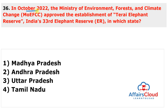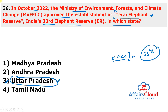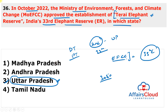Next question: the Ministry of Environment, Forest and Climate Change approved the establishment of the Terai Elephant Reserve. This will be the 33rd elephant reserve of India and is situated in which state? The answer is Uttar Pradesh. The ministry approved the 33rd elephant reserve of India, named the Terai Elephant Reserve, situated in Uttar Pradesh. It would be the second elephant reserve in UP and 33rd in India. The Terai Elephant Reserve will cover an area of almost 3,050 square kilometers, encompassing the Dudhwa Tiger Reserve and Pilibhit Tiger Reserve in UP, situated on the Nepal-India border.